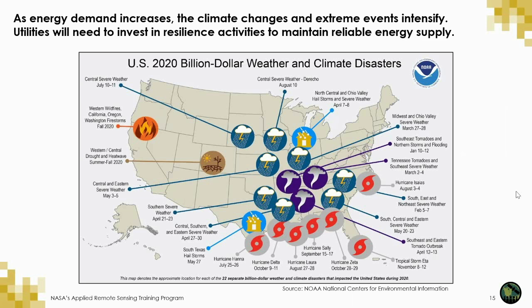You may recognize this figure from NOAA showing the billion-dollar weather and climate disasters that hit the U.S. in 2020 alone. 2020 set a new annual record of 22 billion-dollar events, including droughts, flooding, freezes, severe storms, tropical cyclones, wildfires, and winter storms. From 1980 to 2020, the cost of 285 billion-dollar disasters is $1.875 trillion. All 50 states in the U.S. have had at least one billion-dollar disaster, with Texas facing the most—124 since 1980. As energy demand increases, we see a feedback loop of increasing emissions, increasing contributions to climate change, and intensifying extreme events.